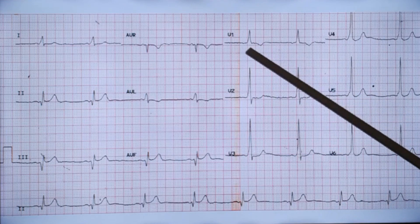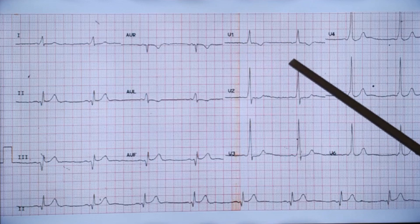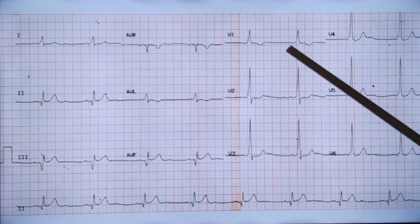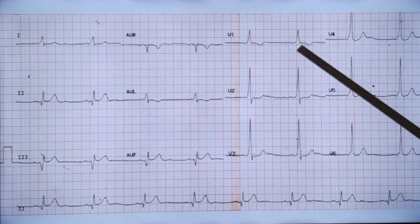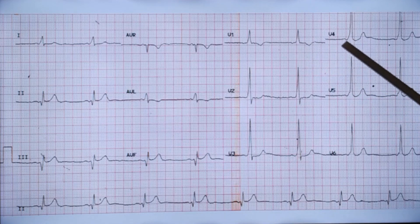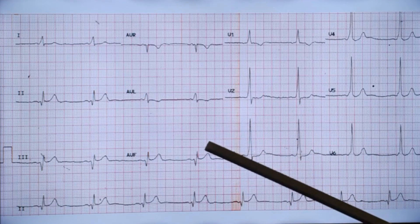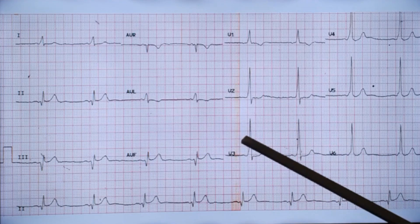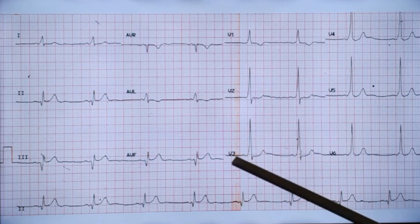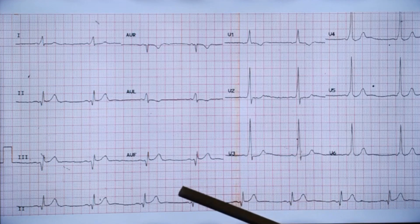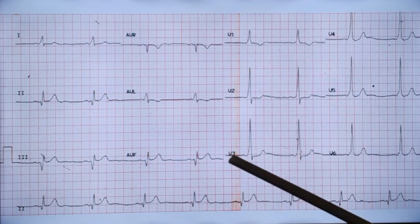You have to carefully look for the PR interval. In some leads the PR interval may appear near normal because part of the delta wave is isoelectric — it is lesser in some leads than others. You have to look at multiple leads to decide the PR interval. Otherwise you might miss the portion of the QRS that is isoelectric and incorrectly think the PR interval is normal.